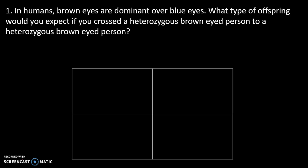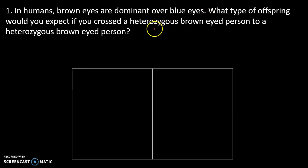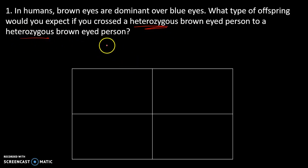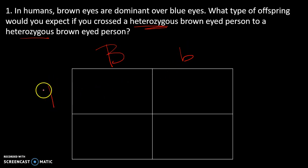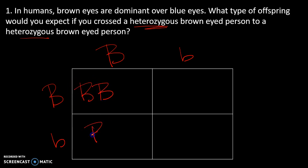Number one: in humans, brown eyes are dominant over blue eyes. What type of offspring would you expect if you were to cross a heterozygous person with another heterozygous person? Heterozygous — it doesn't matter what letter we choose. I'm going to use B, so big B little b crossed with big B little b, and we're going to make our cross.